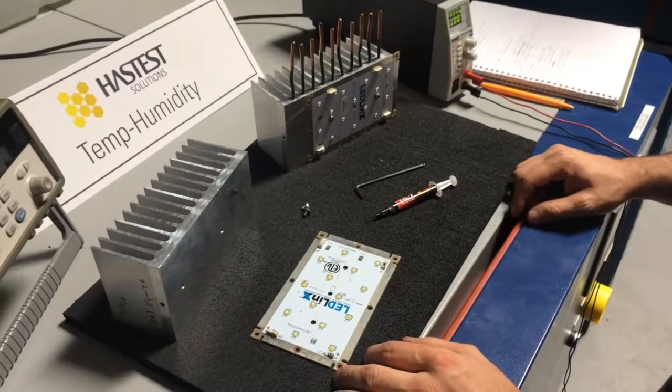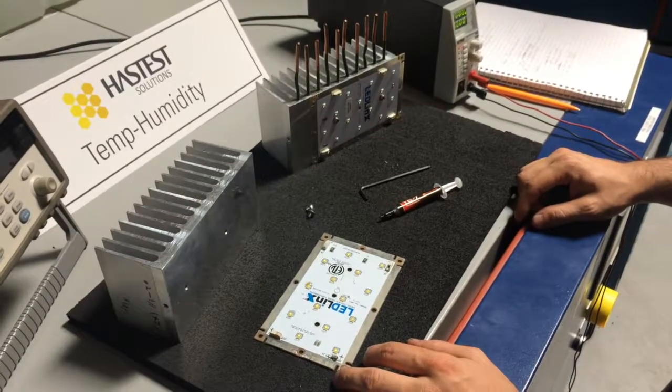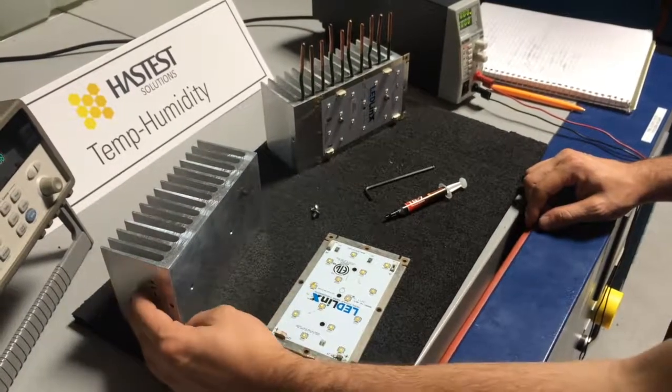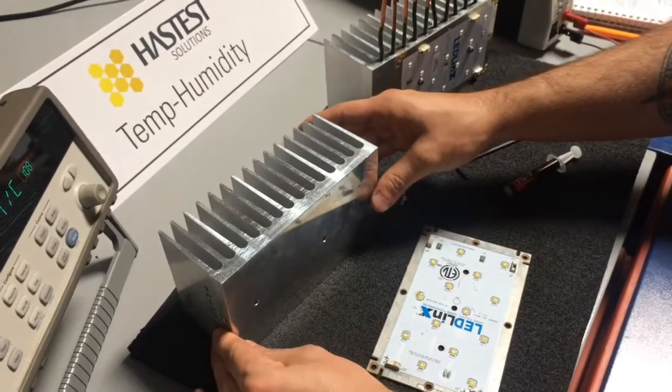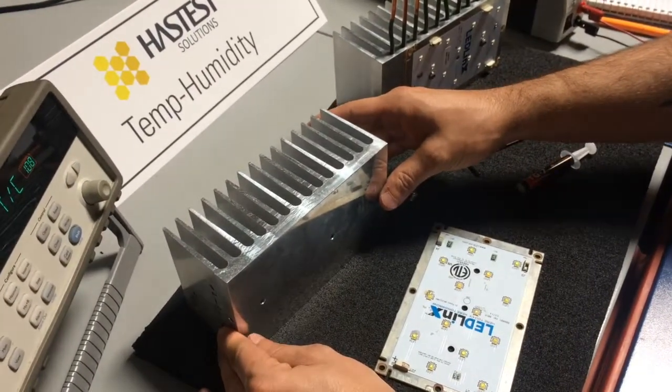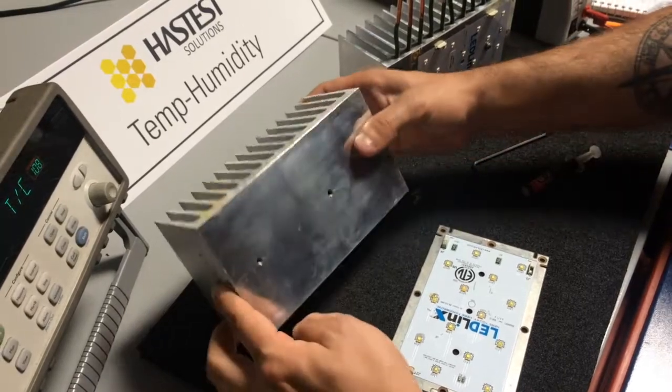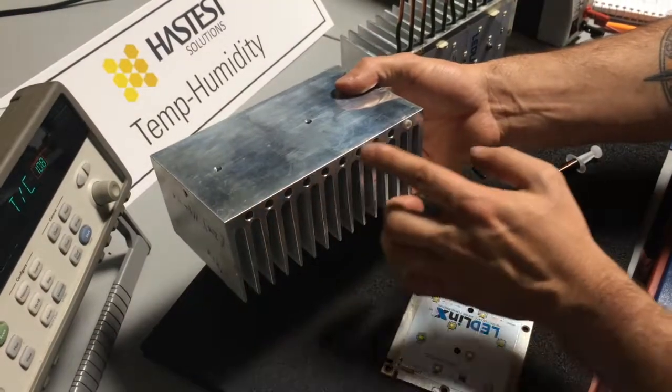Here we have the basic components of our experiment. Let's compare the two heat sinks. The first heat sink is a heat sink without heat pipes. It is the exact same geometry and has holes over here for the thermocouples.